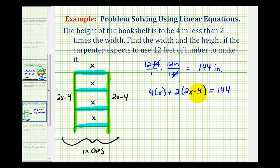So now we'll clear the parentheses and solve for x, which will be our width. So we'll distribute, this would be 4x plus 4x minus 8 equals 144. Combine like terms, 4x plus 4x is 8x.